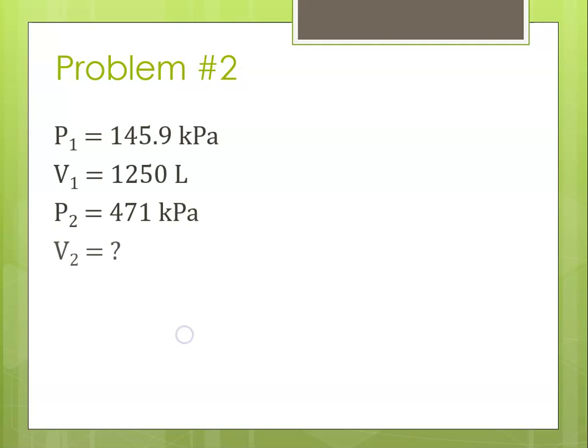So step one, identify variables. P1, V1, P2, and our V2 is the question mark. Remembering that the equation is P1 V1 equals P2 V2. Rearranging to solve for V2, V2 is going to be our initial P1 V1 over our final pressure P2.